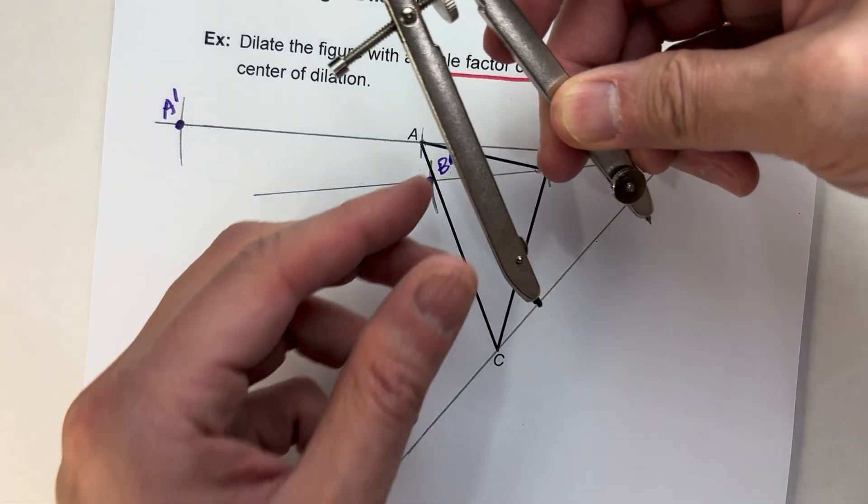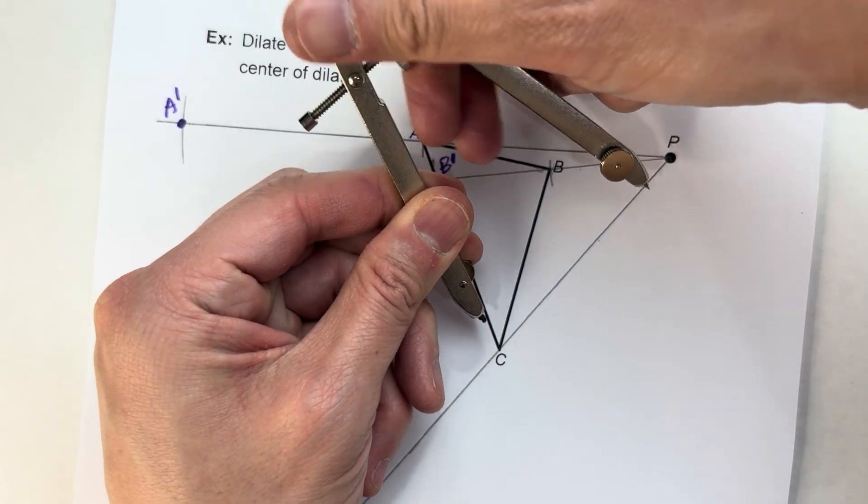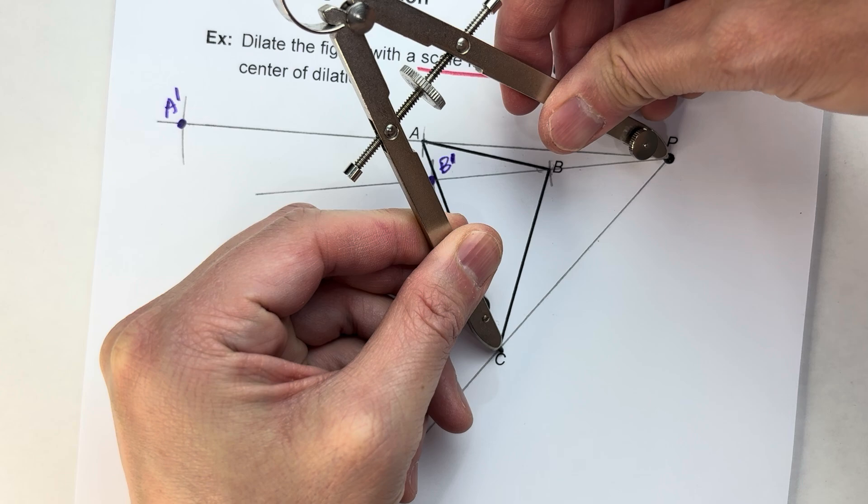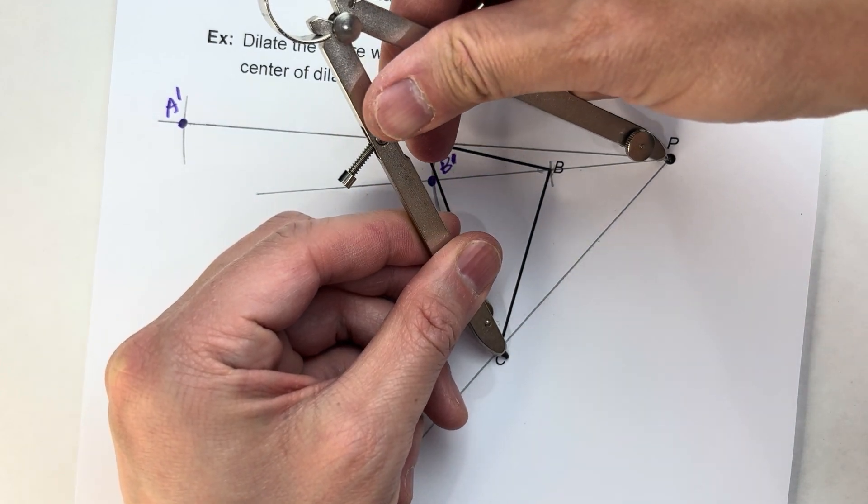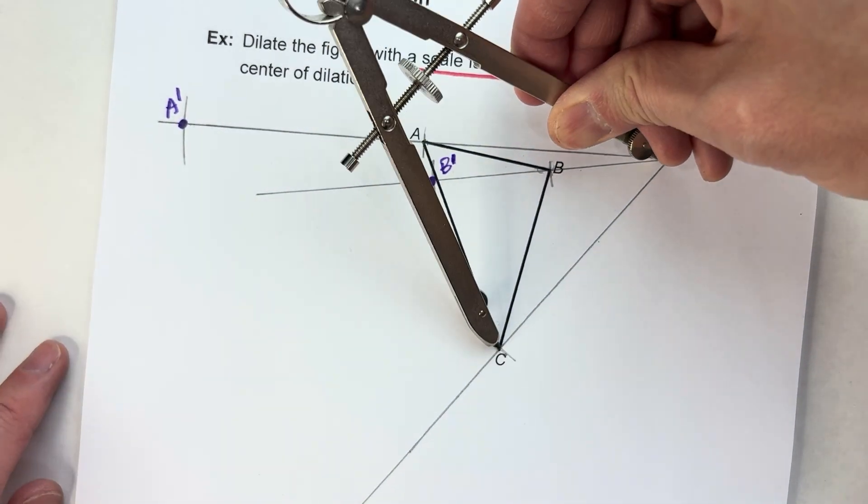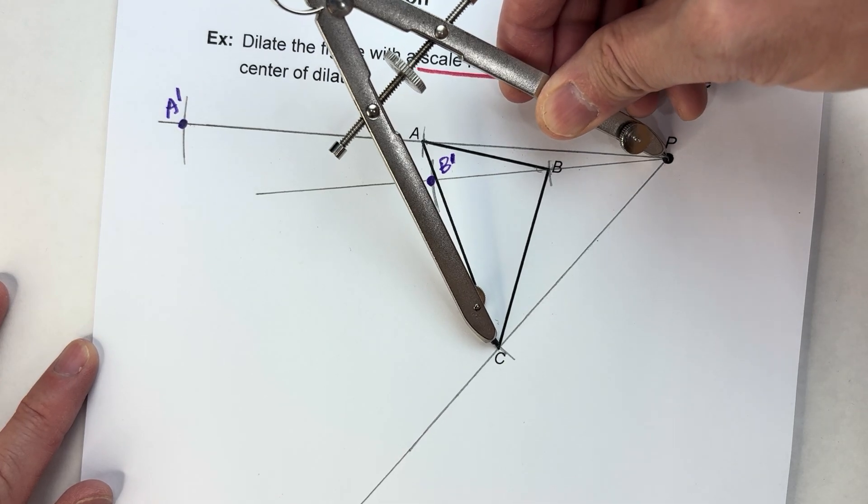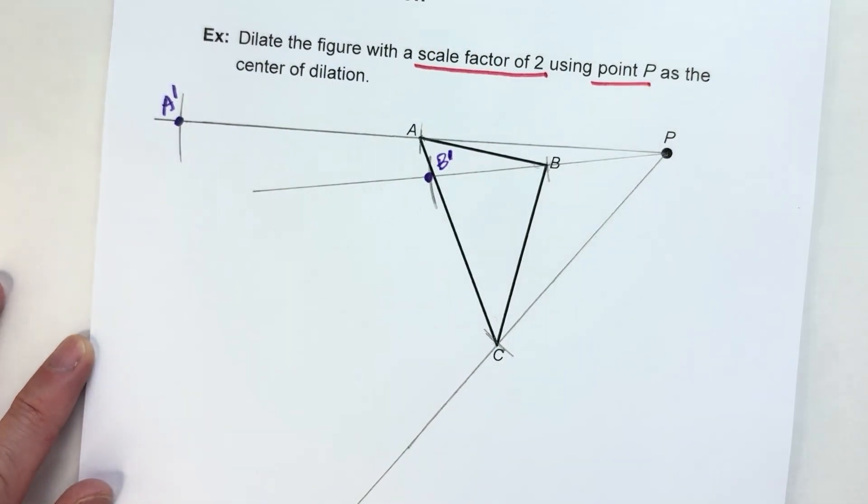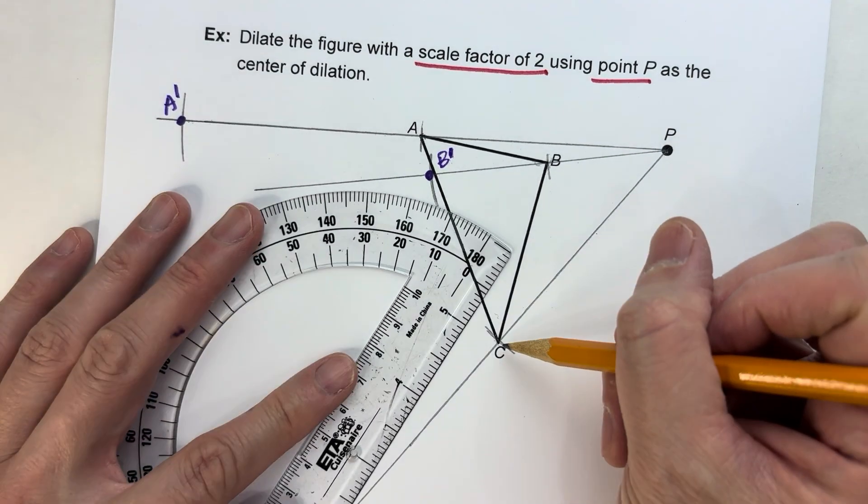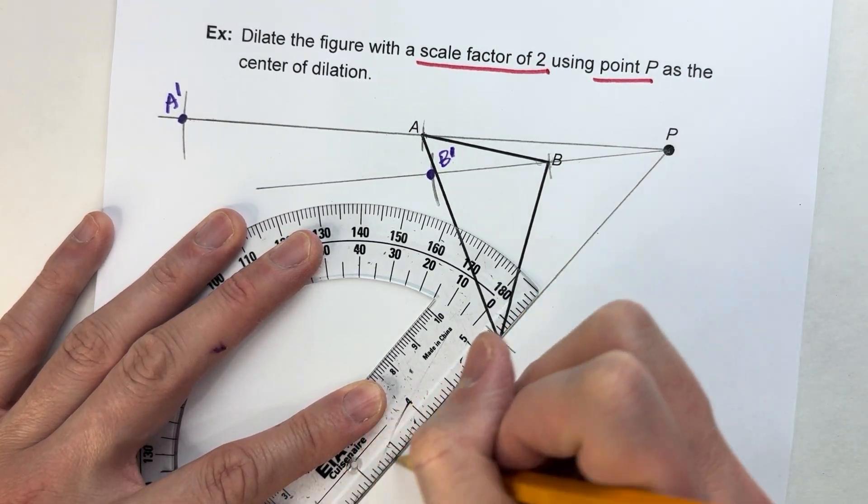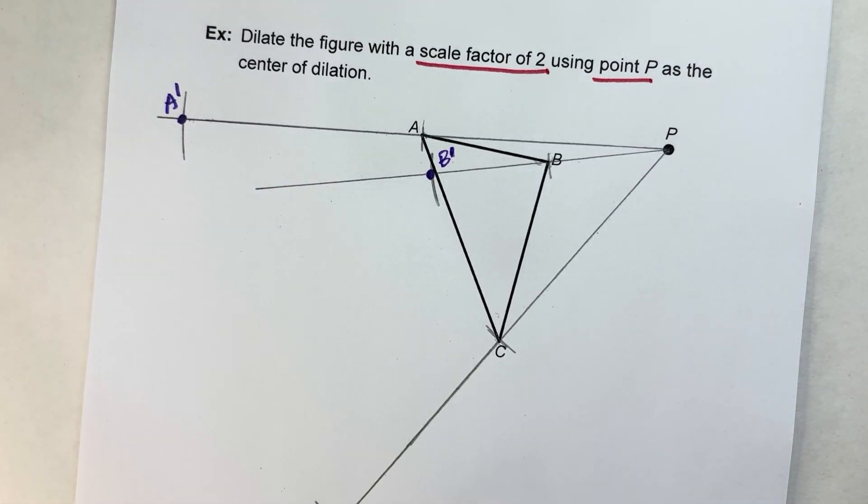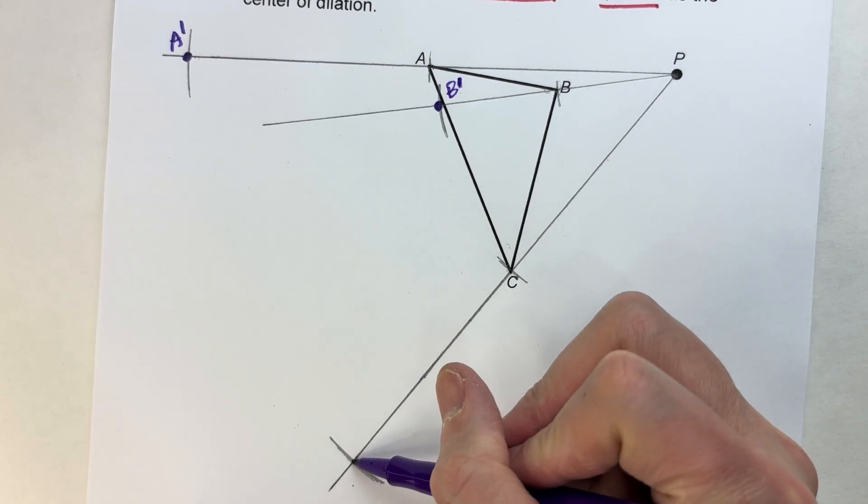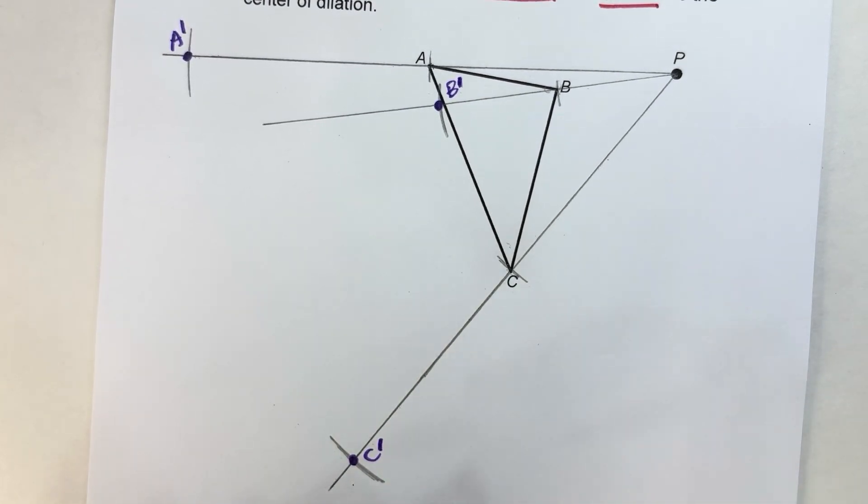And then finally for C. And C, it looks like it has pretty far distance away from P. There it is right here, a little bit bigger, right there. And the scale factor is two, so we're going to double it. One, two. Oh, it's just a little short. I need to extend this line a little bit. Yeah, the shape always ends up a little bit bigger than you expect it to be. So there's where C ends up. That's my C prime.